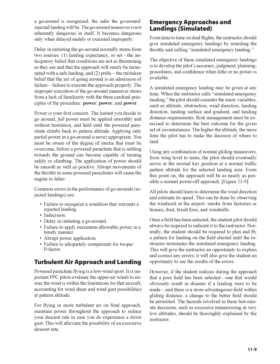Emergency Approaches and Landings (Simulated): From time to time on dual flights, the instructor should give simulated emergency landings by retarding the throttle and calling 'simulated emergency landing.' The objective is to develop the pilot's accuracy, judgment, planning, procedures, and confidence when little or no power is available. When the instructor calls a simulated emergency landing, the pilot should consider the many variables such as altitude, obstructions, wind direction, landing direction, landing surface and gradient, and landing distance requirements.